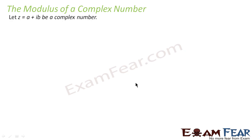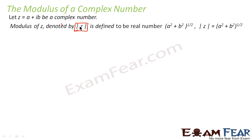Modulus of a complex number: let there be a complex number z = a + ib. The modulus of the complex number z is denoted by |z|, and this is equal to the square root of a² + b². That means we can say |z| = √(a² + b²). Please note that for a complex number a + ib, the modulus is √(a² + b²).